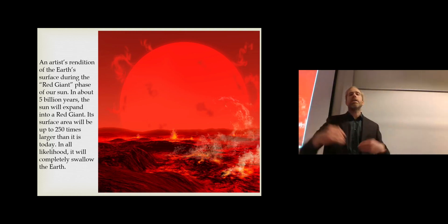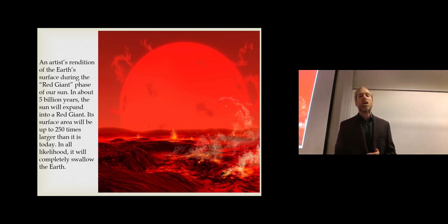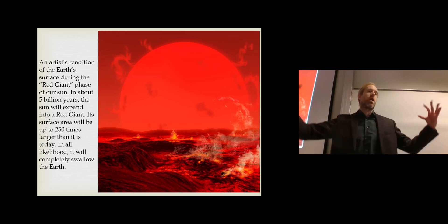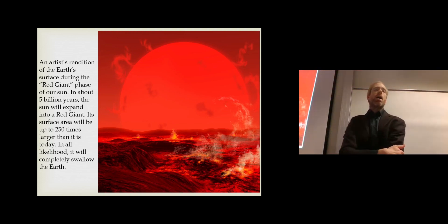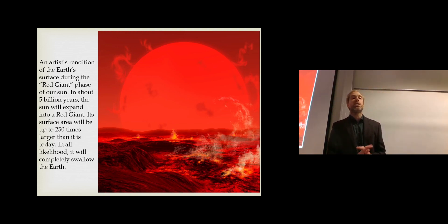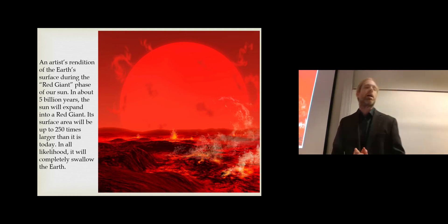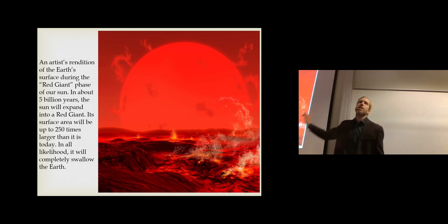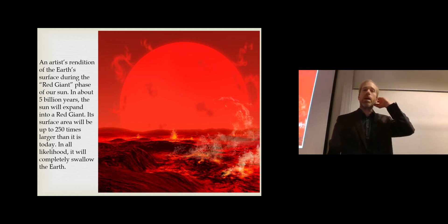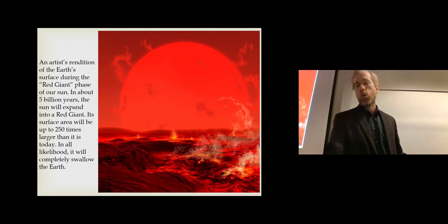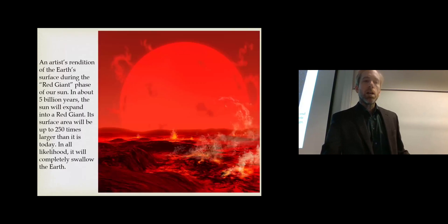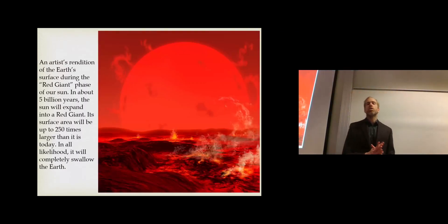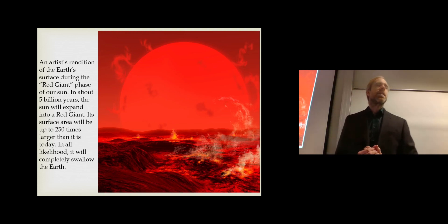Moving further into the long-term future of the planet: there's an artist's rendition of the Earth's surface during the red giant phase of our sun. The sun will continue to expand and grow — becoming dimmer and larger. In about five billion years, the sun will expand into a red giant, its surface area up to 250 times larger than today, and in all likelihood it will completely swallow the Earth. So that's basically what's going to happen — this planet will be burned to a crisp, or may potentially get ejected from its orbit to drift through space as a barren rock.